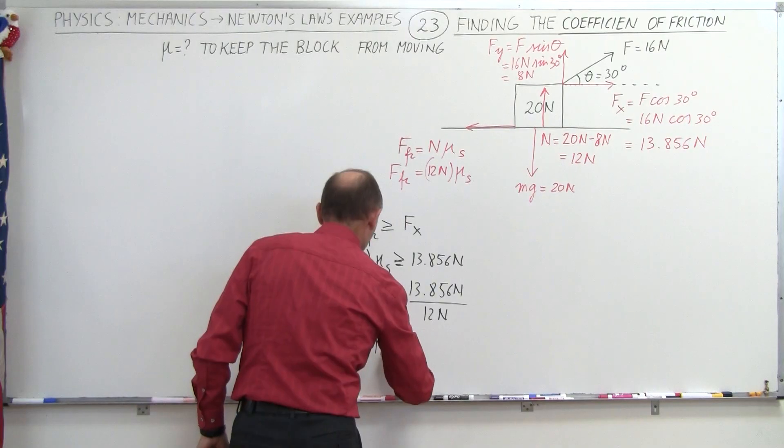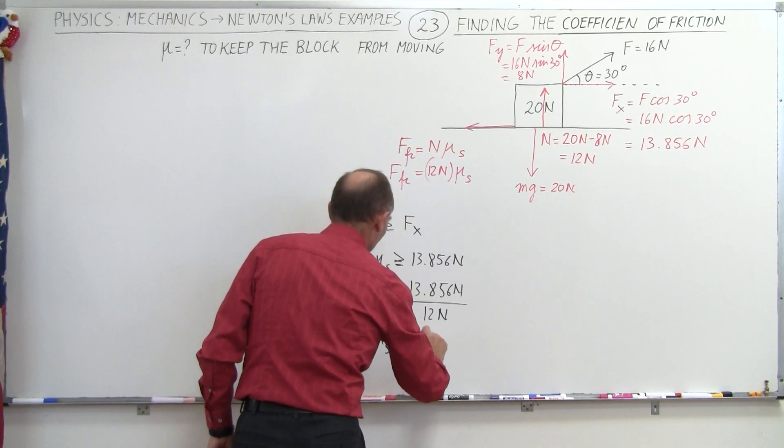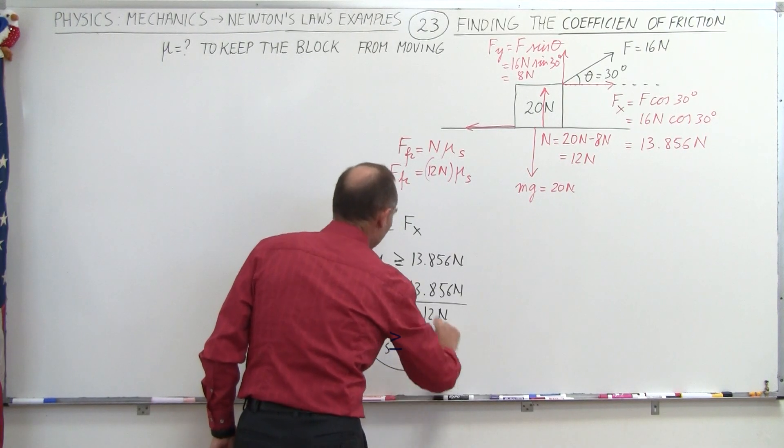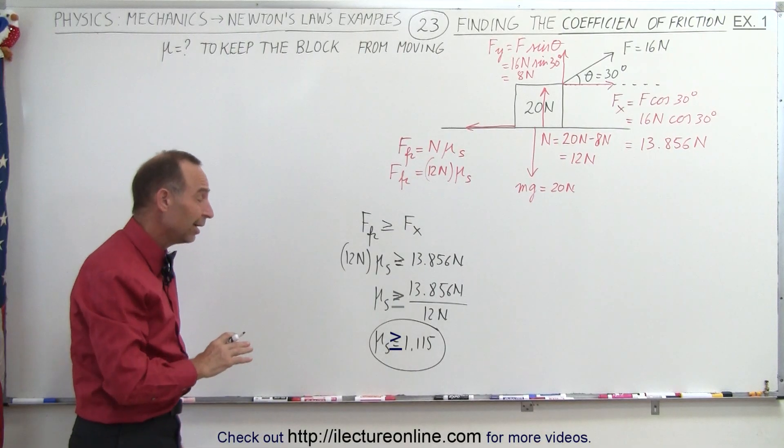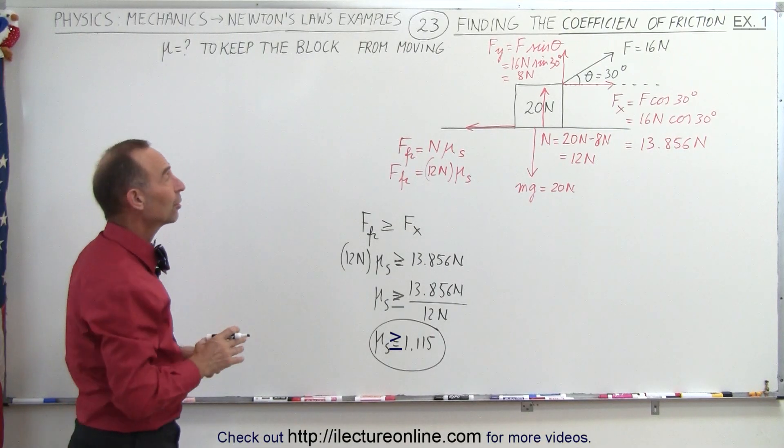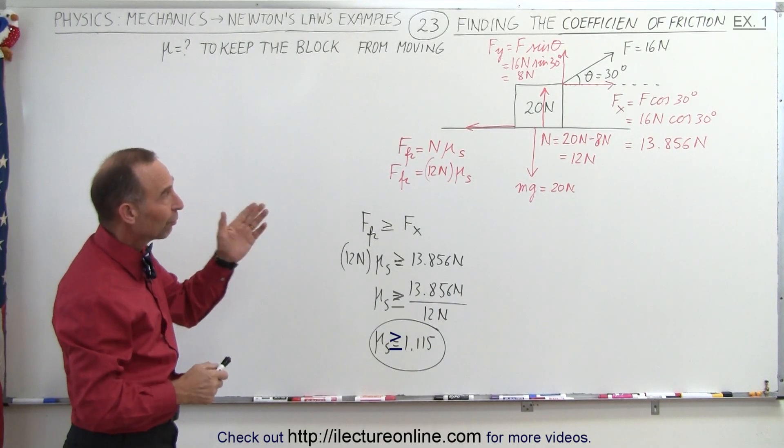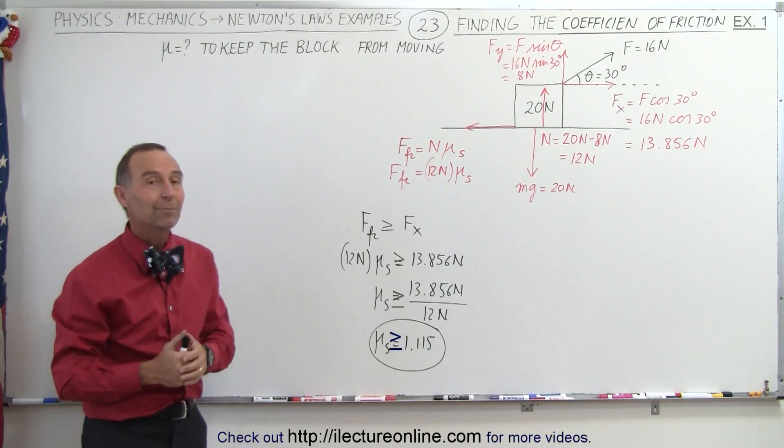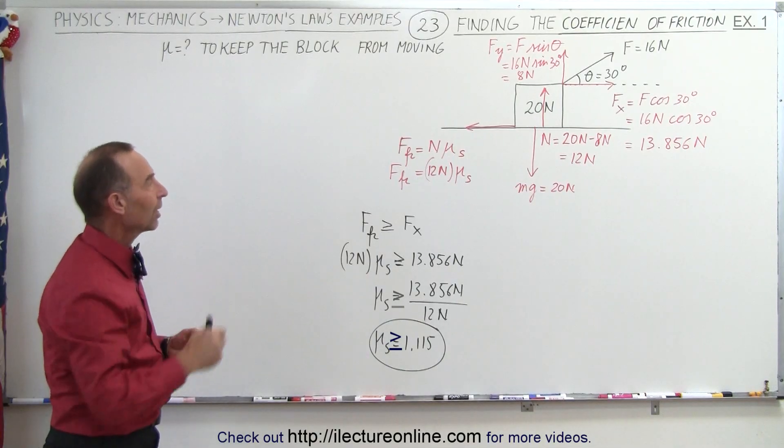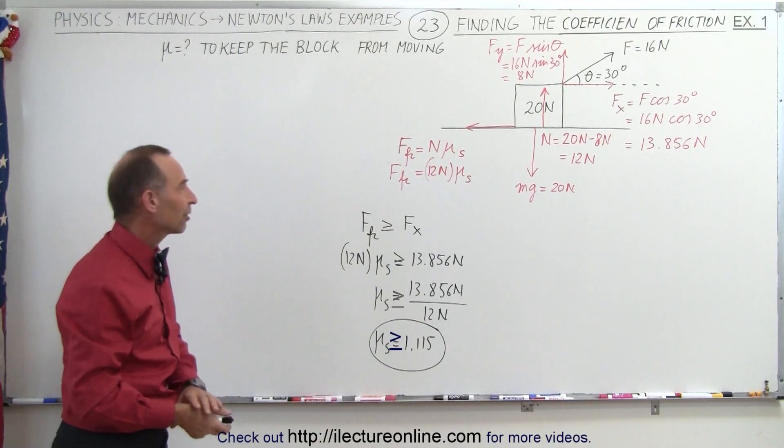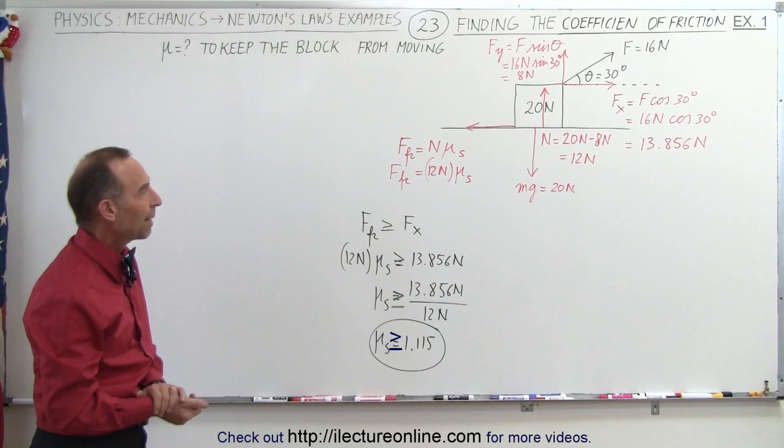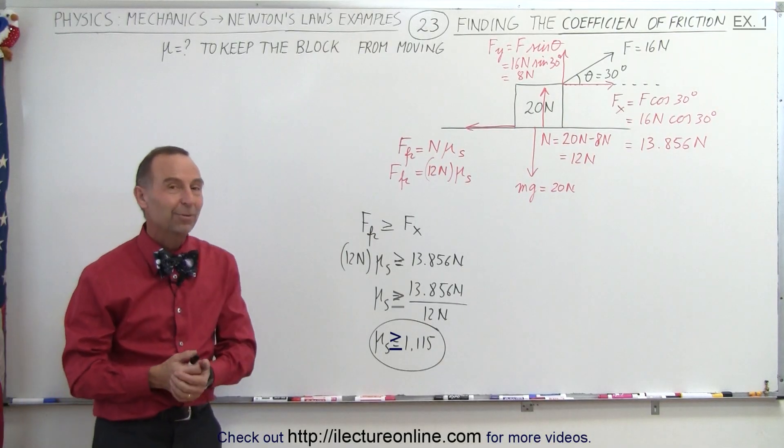Typically the coefficient of friction is only between 0 and 1, so that would be an unlikely scenario. You can safely say that in almost any circumstance, the force applied to the block will indeed be capable of making the block slide, and the coefficient of friction cannot be large enough to keep that from happening. And that's how it's done.